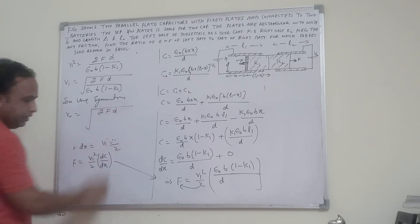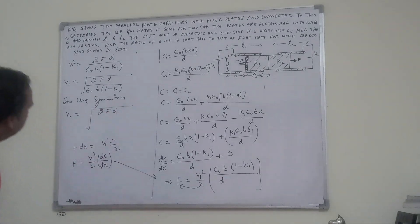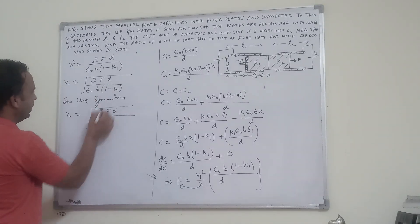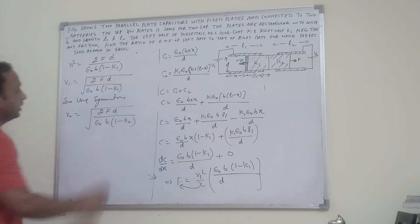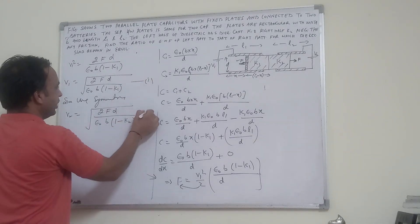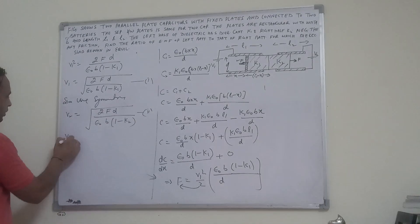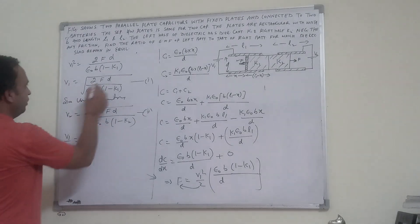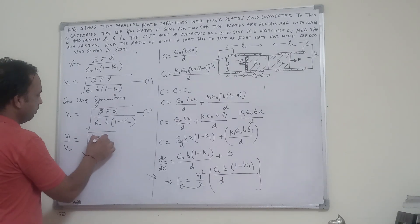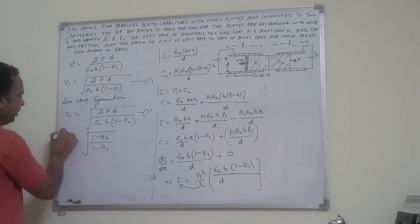Similarly, V2 square equals 2Fd divided by epsilon naught B times 1 minus K2. Now we have to find this ratio. V1 by V2, it comes out to be square root of 1 minus K2 upon 1 minus K1.